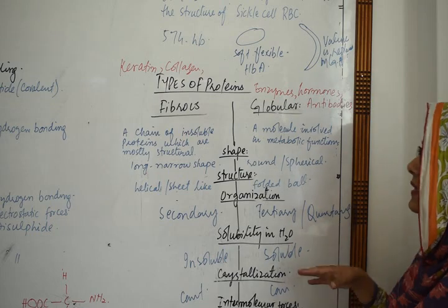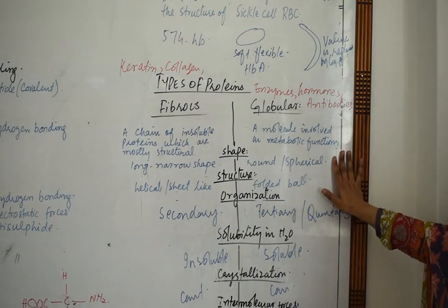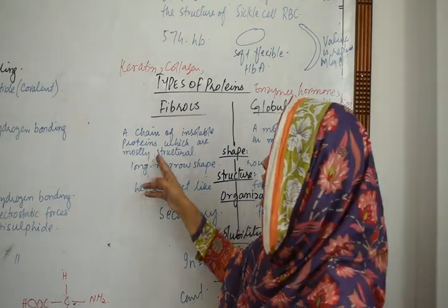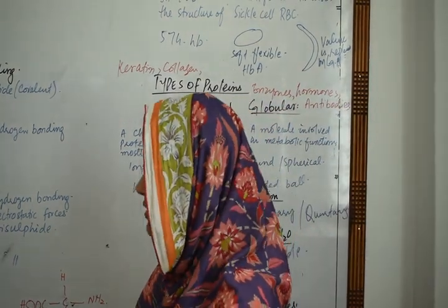We can say that the globular proteins are usually involved in metabolic functions, while fibrous proteins are used for the formation of different structures.